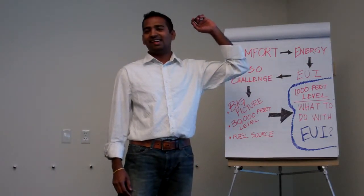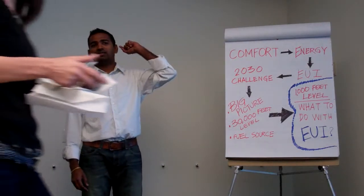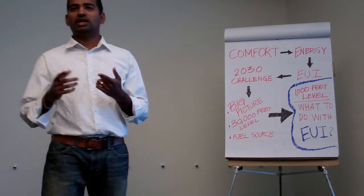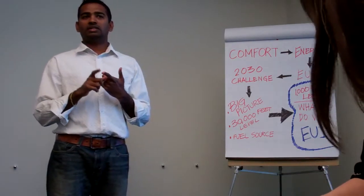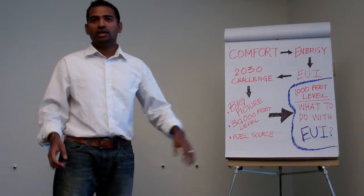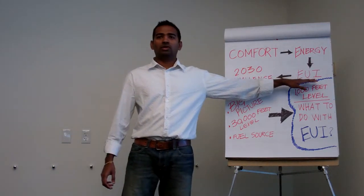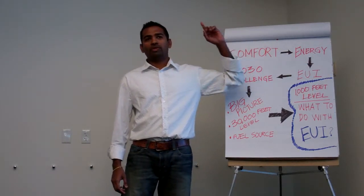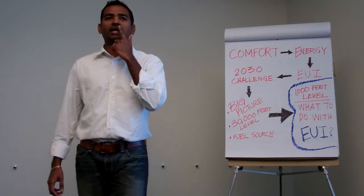BTU divided by square footage. Correct. That will be for your design, right? For your design, you will find the total energy consumption divided by your square footage. That will give you a UI for your design. But for the average building, what are the two numbers that you need to know? Zip code. Zip code and the square footage.